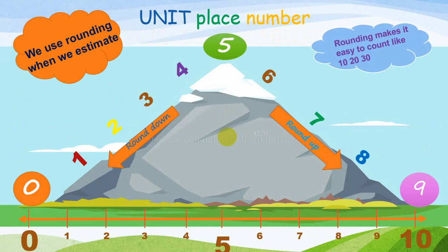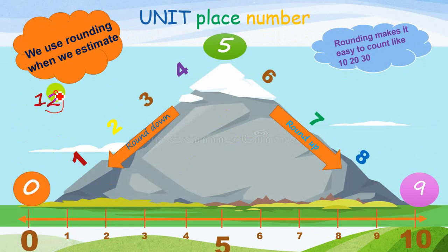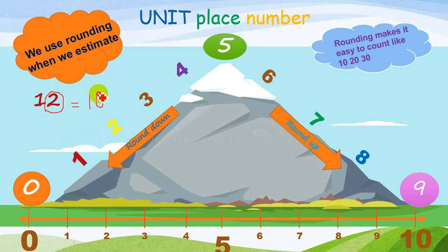Rounding makes it easy to count, like 10, 20, and 30. Now I have the number 12. The digit 2 is present on the units place — you have to look at the number on the units place. Since I have 2, I'm going to change that number to the nearest ten, which is 10.